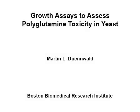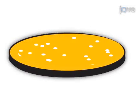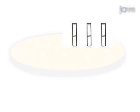The overall goal of this procedure is to use yeast as an experimental platform to assess and analyze the toxicity associated with polyglutamine expansion proteins. Following growth of yeast under conditions that repress polyglutamine expression, three complementary growth assays of yeast cells expressing a toxic polyglutamine expansion protein are performed to reliably assess toxicity.